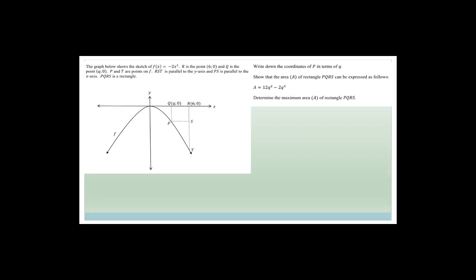R is a point (6, 0) and Q is a point (Q, 0), and points P and T are points on f. It says RT is parallel to the y-axis, which means that the x-value at T is going to be six. P is parallel to QR, and PQRS is a rectangle, which means that the little point there is going to be Q as well.